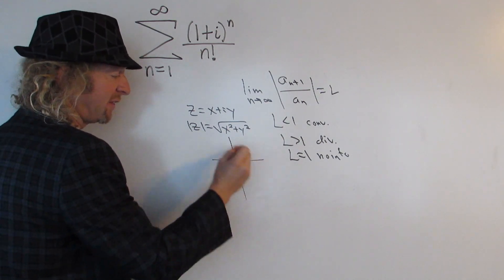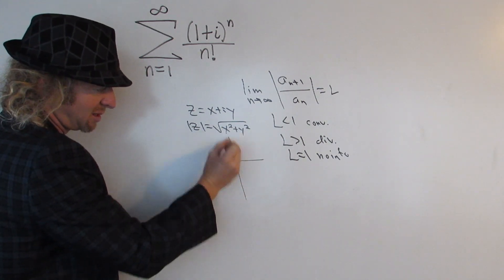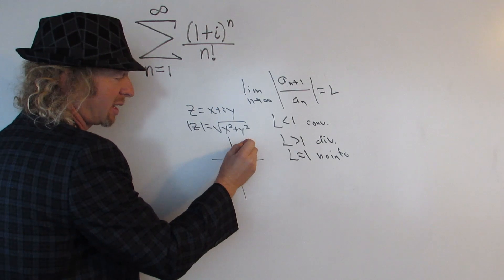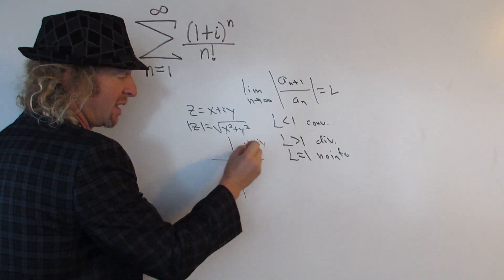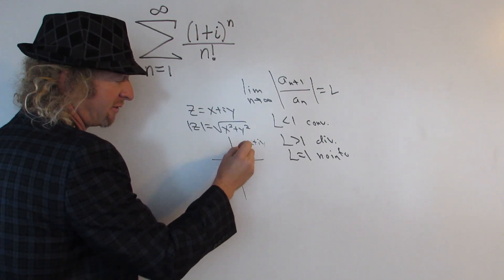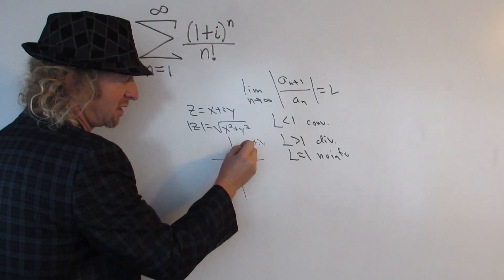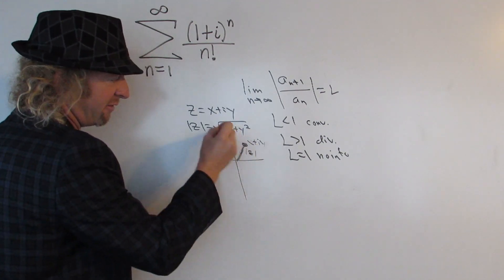And what does this mean graphically? Well, if you take a complex number—this is the real axis, this is the imaginary axis—you can plot it as x plus iy. And the modulus just gives you the length of this vector here. So the modulus of z would be the length of the vector.